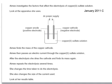Here's another question. Amy investigates the factors that affect the electrolysis of copper sulfate solution. She's using a copper anode and cathode with copper sulfate solution as her electrolyte. Amy finds the mass of the copper cathode, then passes an electric current through the solution. After the electrolysis, she dries the cathode and finds its mass again. Amy repeats the electrolysis several times, changing the time and the size of the current used.